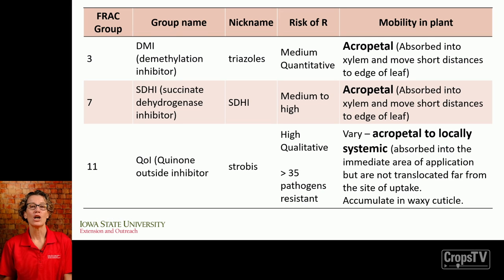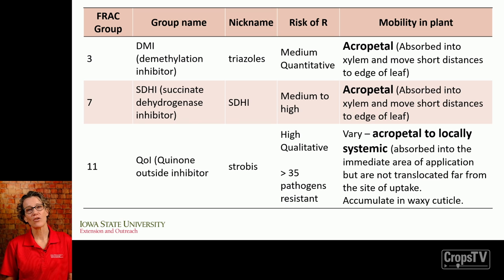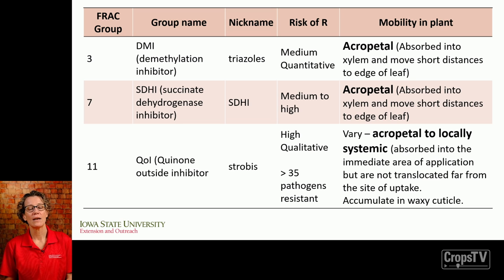Looking at our different fungicide groups: most DMIs are acropetal — absorbed into the xylem and moving short distances to the edge of the leaf — similar to the SDHIs. For the QOIs, there is big variation in how systemic they are; they can be acropetal or locally systemic, just getting absorbed into the cuticle and possibly moving across the leaf to the other side.